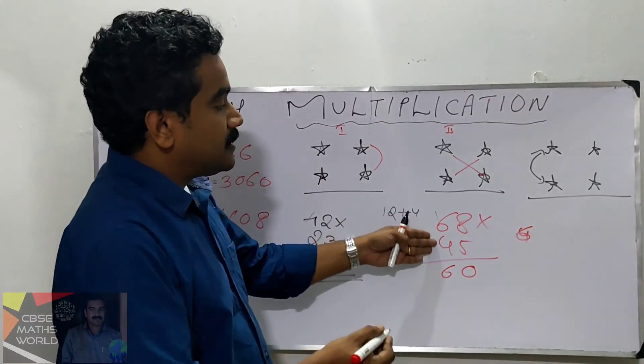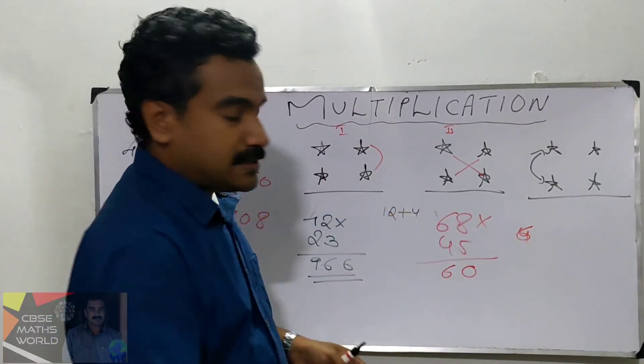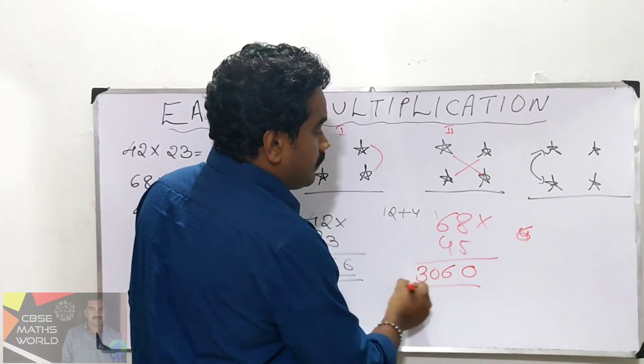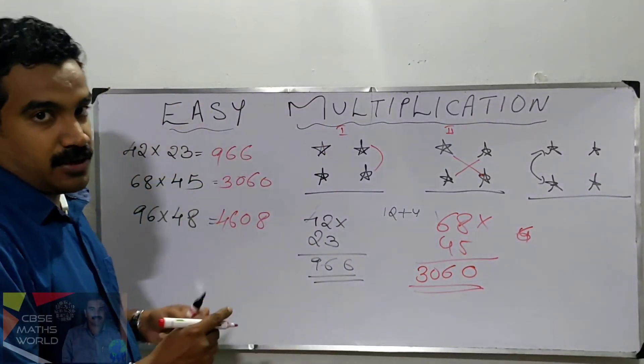Then 6 into 4 is 24. 24 plus 6 is 30. So the answer is 3060. This is the technique we are using.